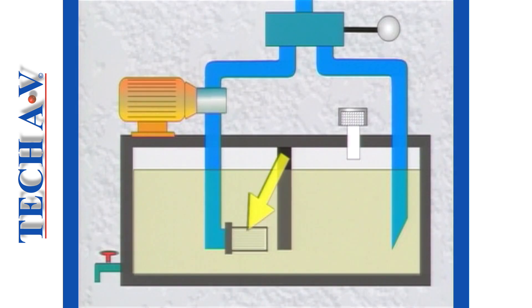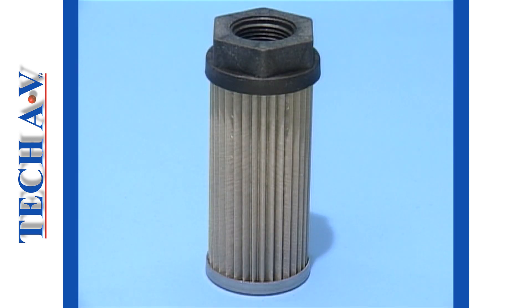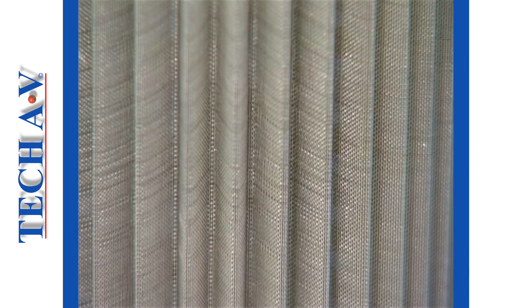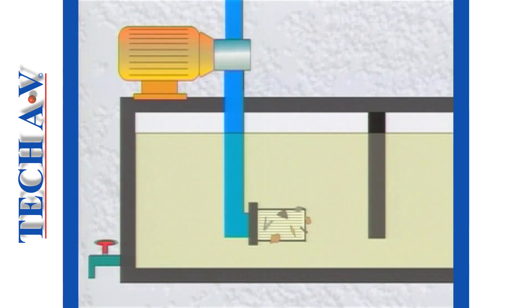Next, we see the suction strainer situated at the suction end of the pump inlet. This is normally constructed from fine wire mesh, having a pore size of around 100 microns. The suction strainer purely offers protection against large particles or objects, such as rust flakes, bits of gasket material, or other debris, from entering the pump and destroying it.